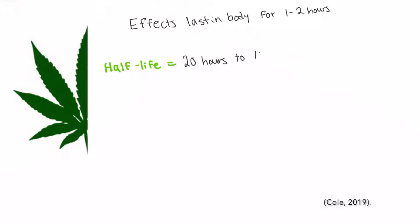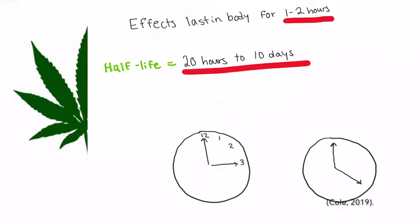The primary effects of THC last for about one to two hours. However, half the chemical is still in the system for 20 hours to about 10 days depending on the consumption.